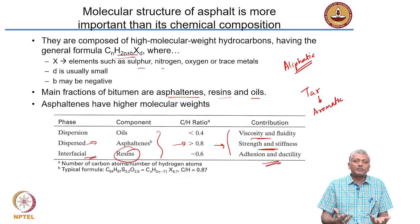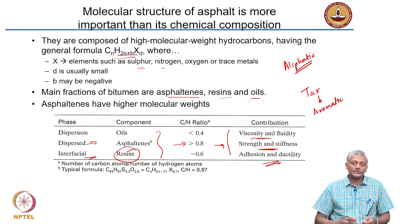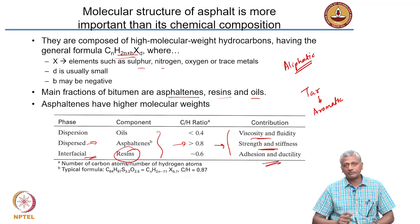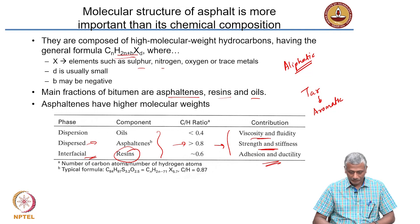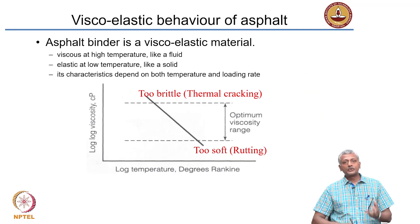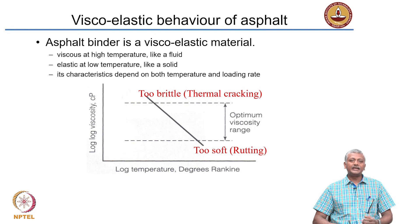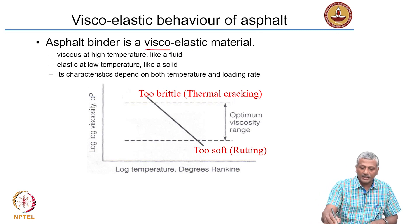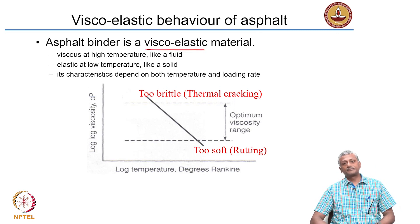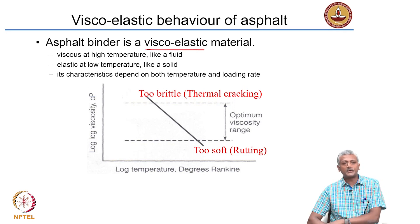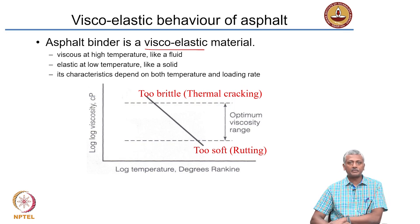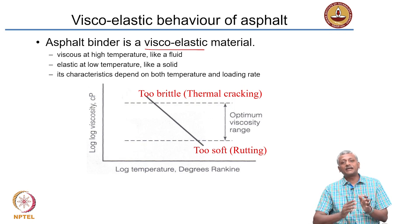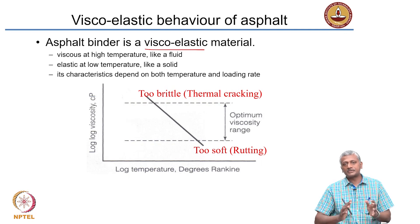Asphalt looks like a uniformly black material, but it is actually composed of several different components which need to be understood carefully. Most importantly, asphalt is highly dependent upon temperature because asphalt is a viscoelastic material. As discussed in the chapter on polymers, one important consideration is to assess its viscoelastic behavior and the range of temperatures over which you can get satisfactory performance as a solid.